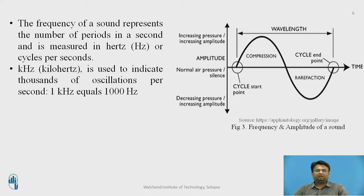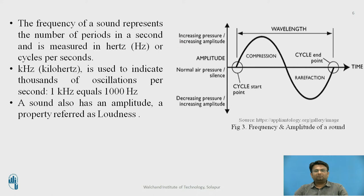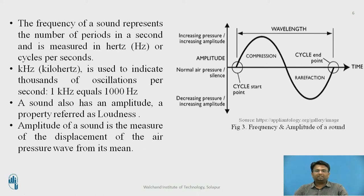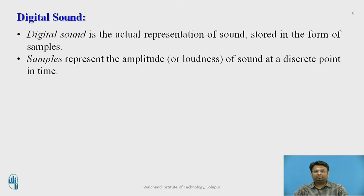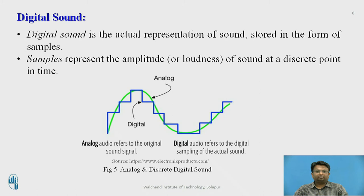The frequency of the sound represents the number of periods per second and is measured in hertz or cycles per second. Kilohertz is used to indicate thousands of oscillations per second — 1 kilohertz equals 1000 hertz. Sound also has an amplitude, a property referred to as loudness. The amplitude of sound is a measure of displacement of the air pressure wave from its mean position. A digital sound is the actual representation of sound stored in the form of samples. The diagram indicates the difference between analog and discrete digital sound. The green curve represents the analog waveform, which is the original sound signal, whereas the blue curve represents a digital sampling of the actual analog sound.